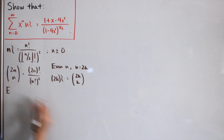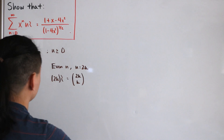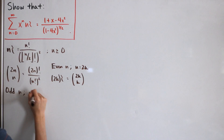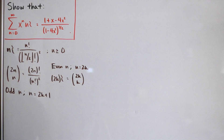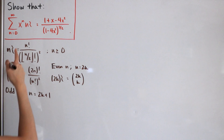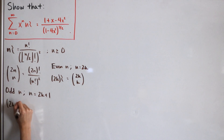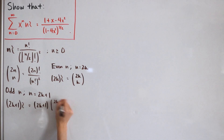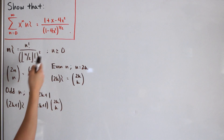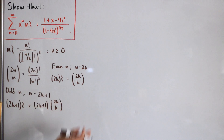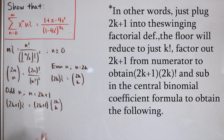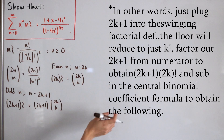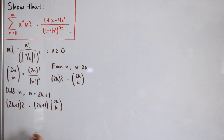For the odd case, with n = 2k+1, substituting into the swinging factorial definition gives: the swinging factorial of (2k+1) = (2k+1) · C(2k, k). You can verify this with a bit of factorial simplification. So now we have formulas for both even and odd terms.